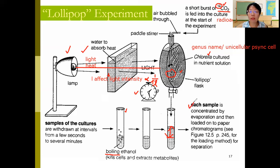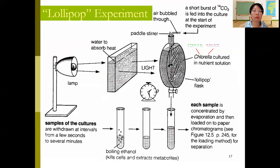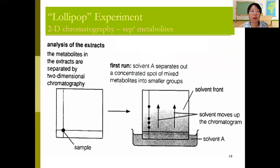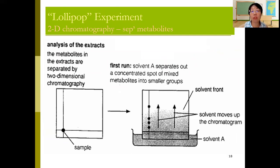Each collected sample is concentrated by evaporation and then loaded onto paper chromatography — if not concentrated, it's too dilute to see results. He performed a two-dimensional chromatography, meaning the chromatography is run twice, each time at 90 degrees to each other.